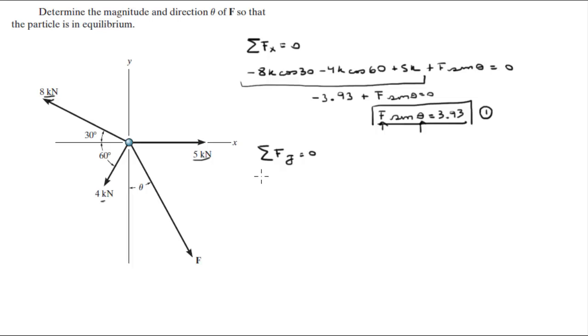The y component of this 8kN force is positive 8k sine of 30. This 4kN force has a y component of negative 4k sine of 60. This 5kN force has no y component so it's plus 0. And the force that we're looking for has a negative f cosine of theta y component, which—the sum of all the forces is equal to 0.